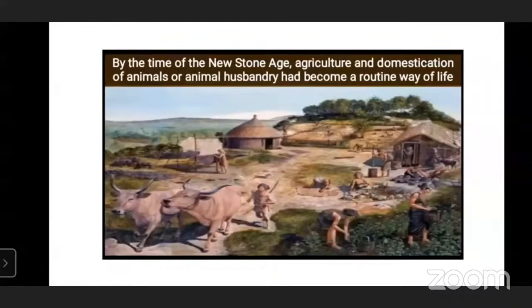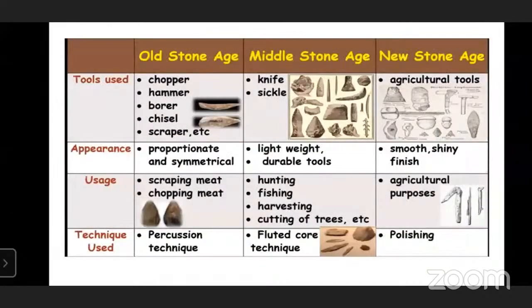Agriculture and animal husbandry became the main way of life. There are many sites of New Stone Age culture in India, especially along the Ganga River and in the South, where we can get evidences about the New Stone Age.